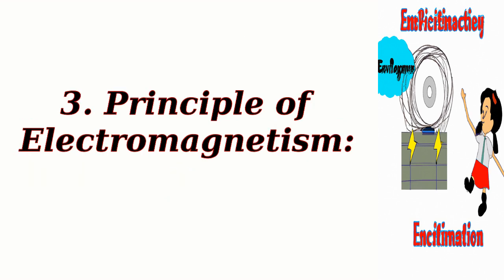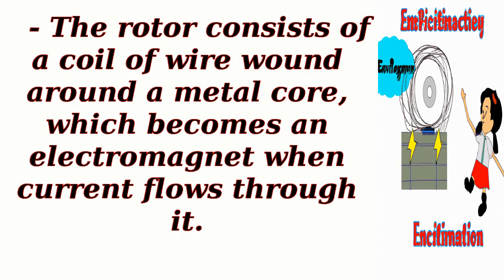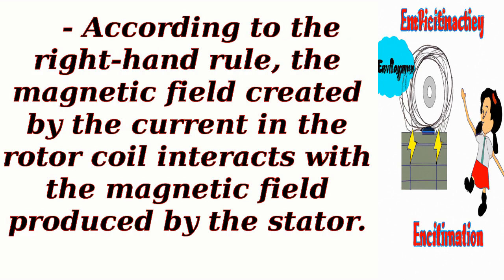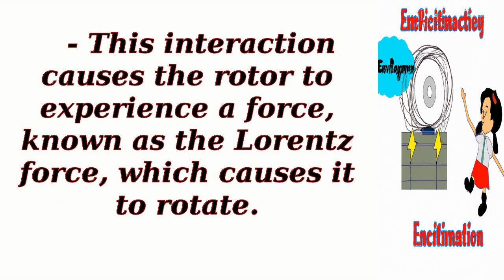Principle of electromagnetism: The rotor consists of a coil of wire wound around a metal core, which becomes an electromagnet when current flows through it. According to the right-hand rule, the magnetic field created by the current in the rotor coil interacts with the magnetic field produced by the stator. This interaction causes the rotor to experience a force, known as the Lorentz force, which causes it to rotate.